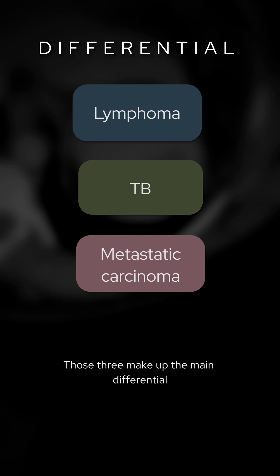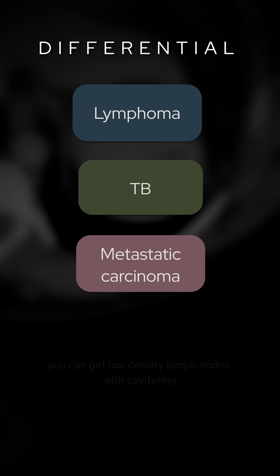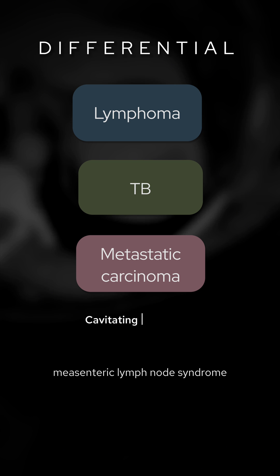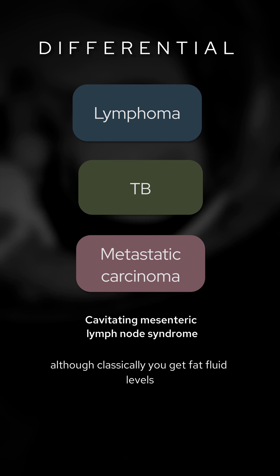Those three make up the main differential, but there are less common causes. You can get low density lymph nodes with cavitating mesenteric lymph node syndrome, which can be associated with celiac disease, although classically you get fat fluid levels.